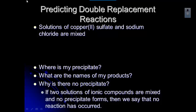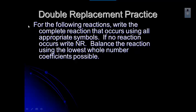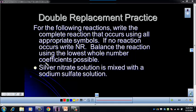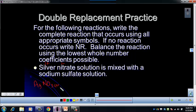Let's take a look at another one — I'd like you to start trying this. For the following reactions, write the reaction including all appropriate symbols. If there's no reaction, write NR. Balance using the lowest whole number coefficients. Pause and write the reactants and see if you can figure out the products. Silver nitrate: silver is a 1+, nitrate is a 1 minus, so that's AgNO3, AQ. Then sodium sulfate: sodium is a 1+, sulfate is a 2 minus, so that's Na2SO4, AQ.